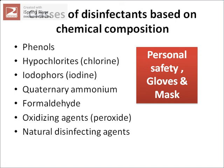There are different classes of disinfectants based on their chemical composition. The most common in the poultry sector are: phenols, hypochlorites, iodophores, quaternary ammonium compounds, formaldehyde, oxidizing agents, and natural disinfectants. Because disinfectants can be dangerous for workers, the use of gloves and a mask is recommended, and company instructions should always be followed.